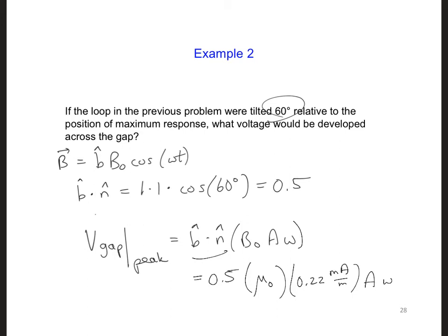And then we also multiply times A and omega. So, the final result here that we get is going to be 0.25 millivolts at the peak. So, that's half of the voltage we got when the loop was oriented in the best position, which would have the B flux cutting straight through the surface of the loop.